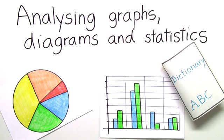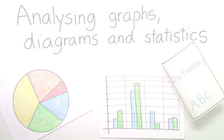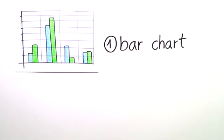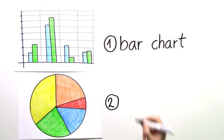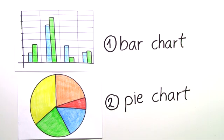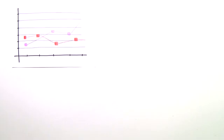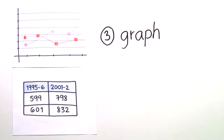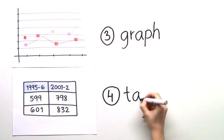Let's start. In this clip we'll be talking about four basic types of presenting numbers on paper. Type 1: the bar chart. Type 2: the pie chart. Type 3: the graph. And type 4: the table.